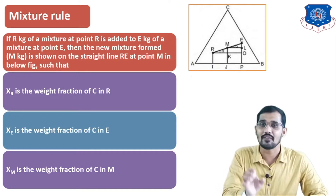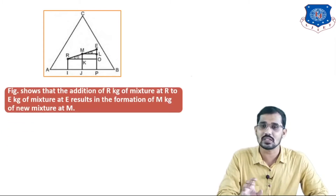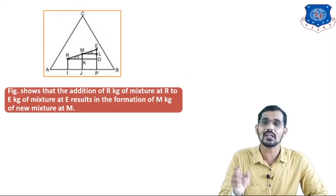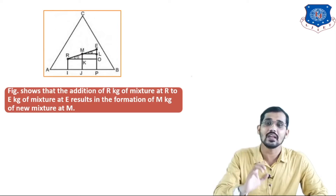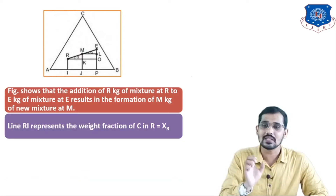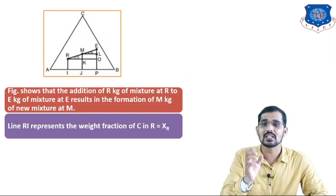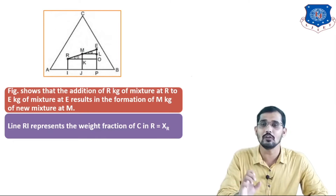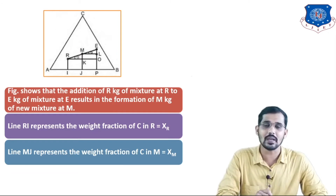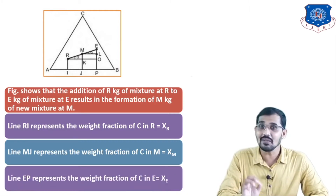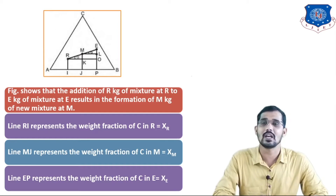Now we will see the derivation for this mixture rule. You can see in this figure: addition of R kg of the mixture at point R to E kg of the mixture at point E gives the M mixture at point M. There is the RI line, MJ line, and EP line. Line RI represents the weight fraction of C in the raffinate phase, that is XR. The MJ line represents the weight fraction of the solute C in the mixture, that is XM. And the EP line gives the weight fraction of the solute in the extract phase.